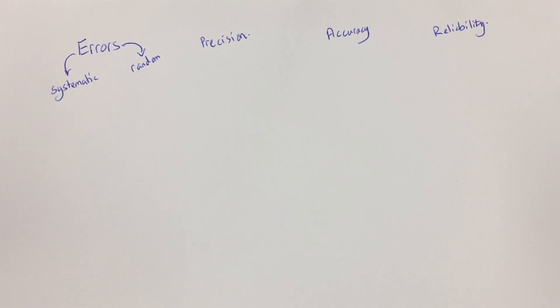This video is for A-level physics, looking at firstly the key words that we need to use when we're analysing, evaluating and planning our practicals, and then looking at uncertainty.